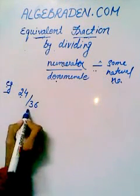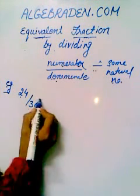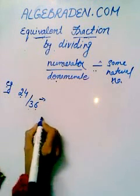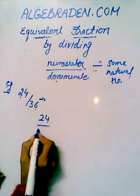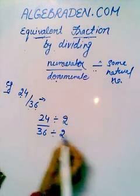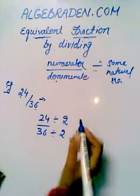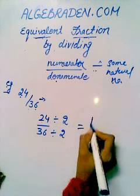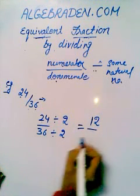For example, 24 over 36. To find its equivalent fraction, we divide the numerator and denominator by the same natural number. So, we divide both by 2. It gives us 12 over 18.